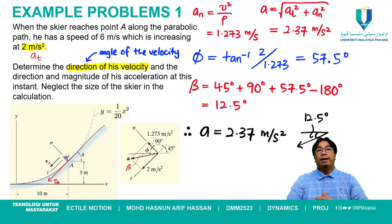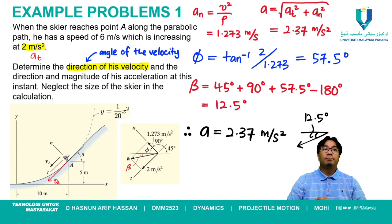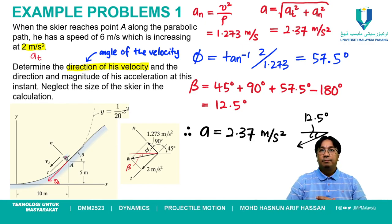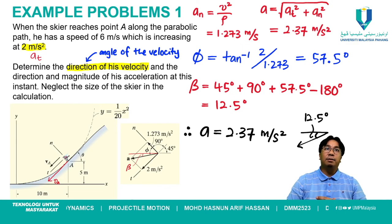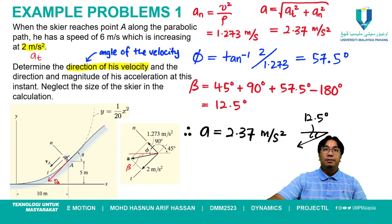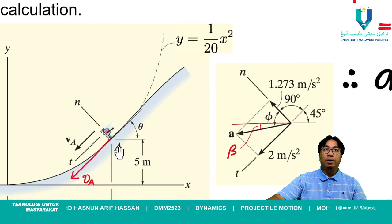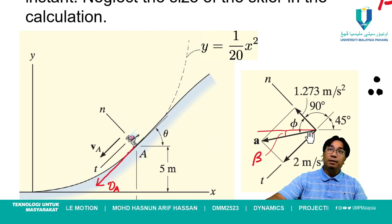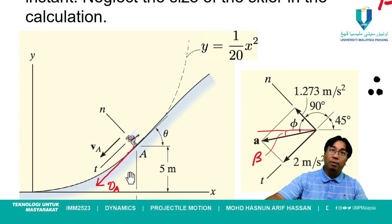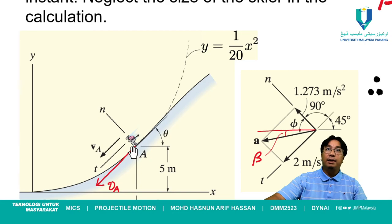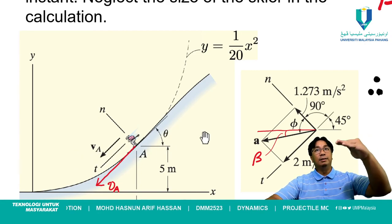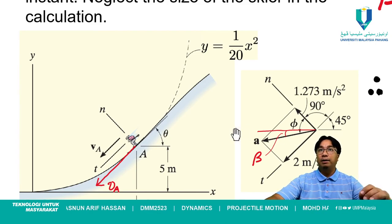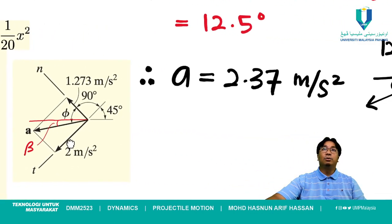A student asks why the direction of acceleration is downward. The answer is that the skier is moving downhill, so naturally the acceleration points downward. The acceleration vector, superimposed on the figure, points in that direction. The angle from the horizontal is the beta value of 12.5 degrees that we calculated. When a question asks for direction, we always refer to the horizontal reference line.